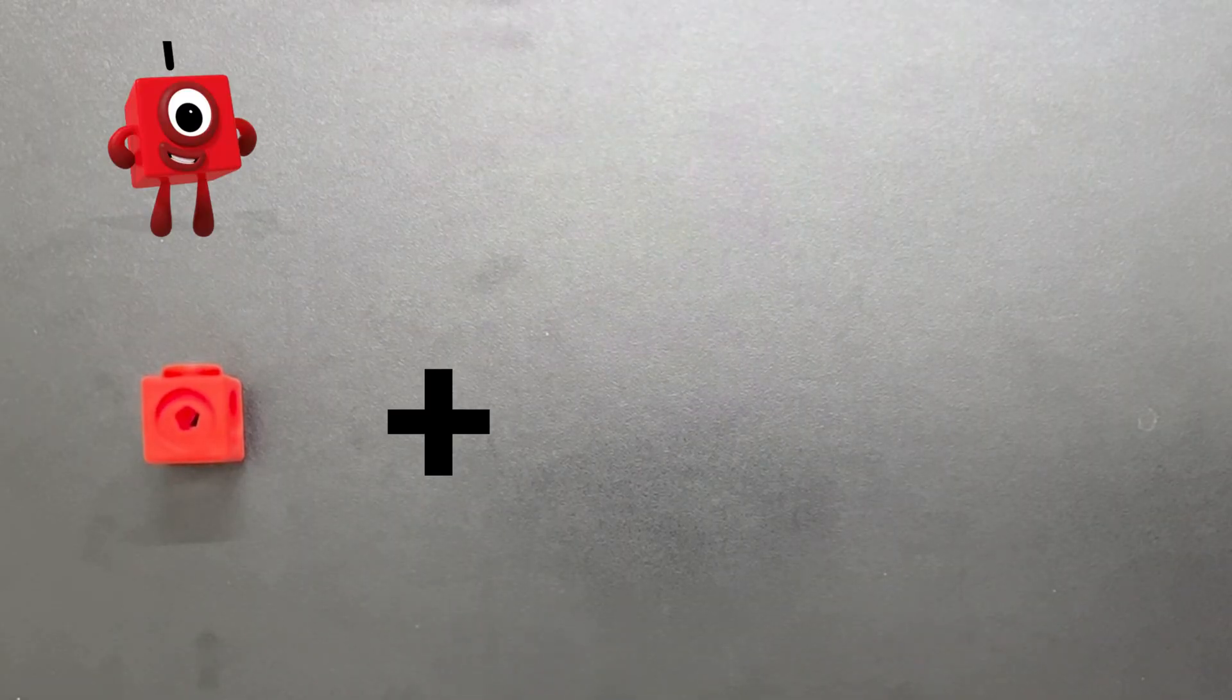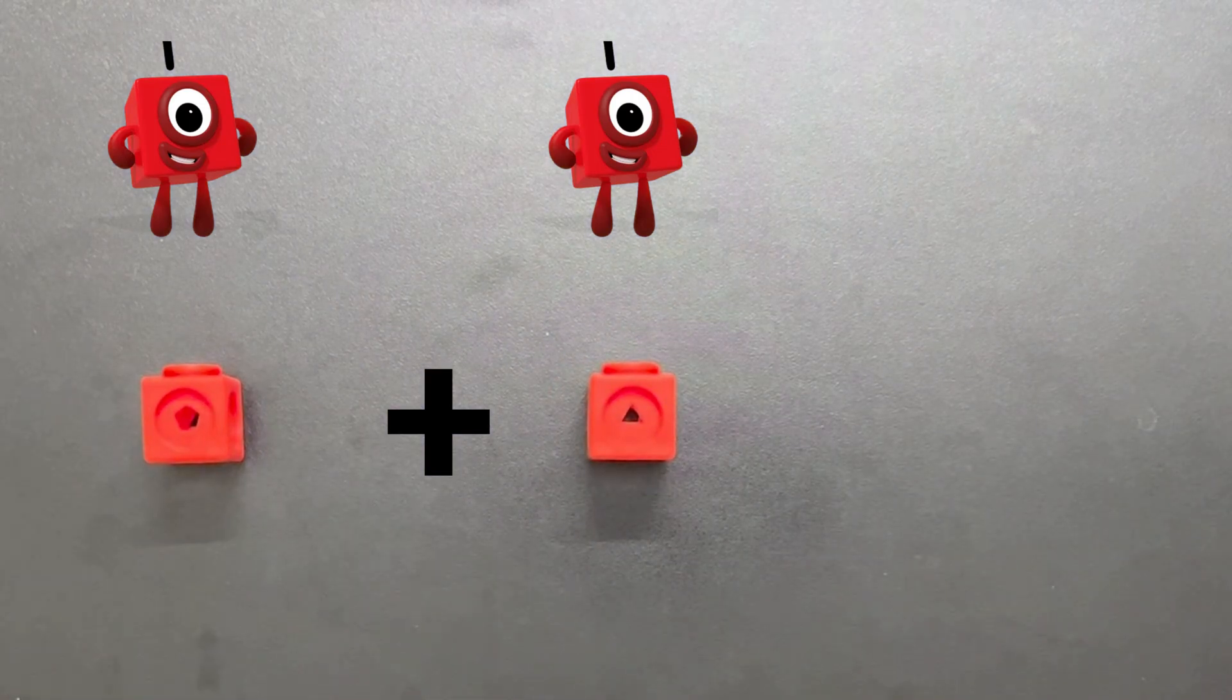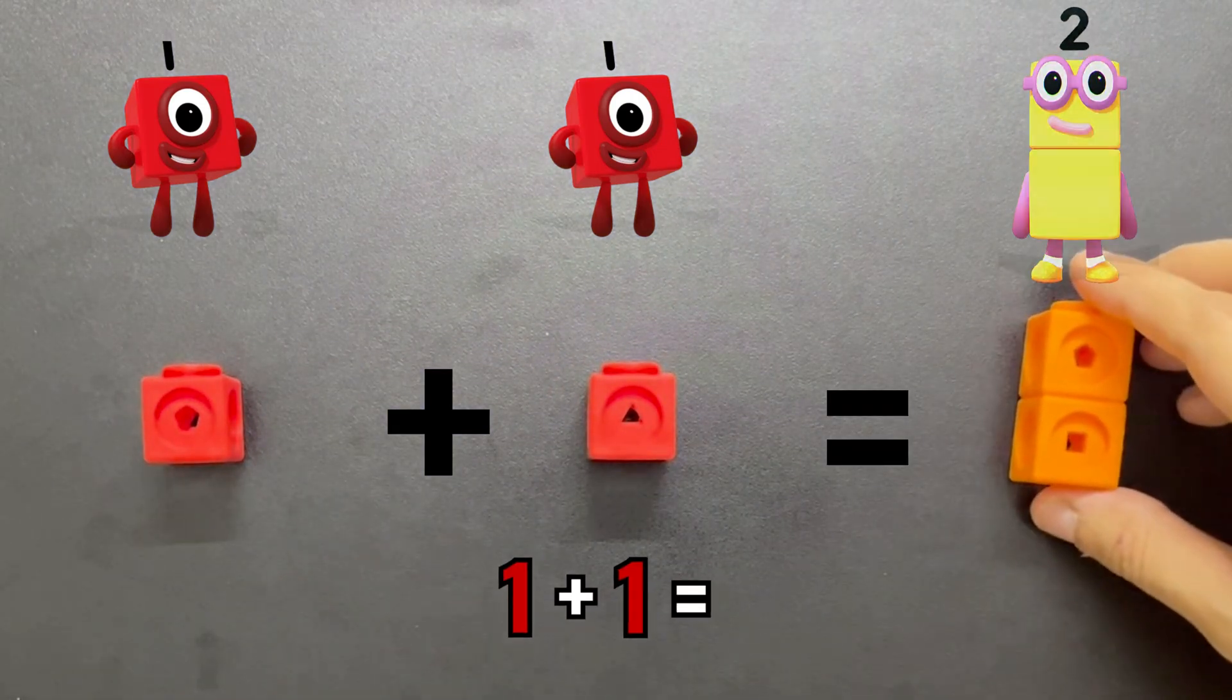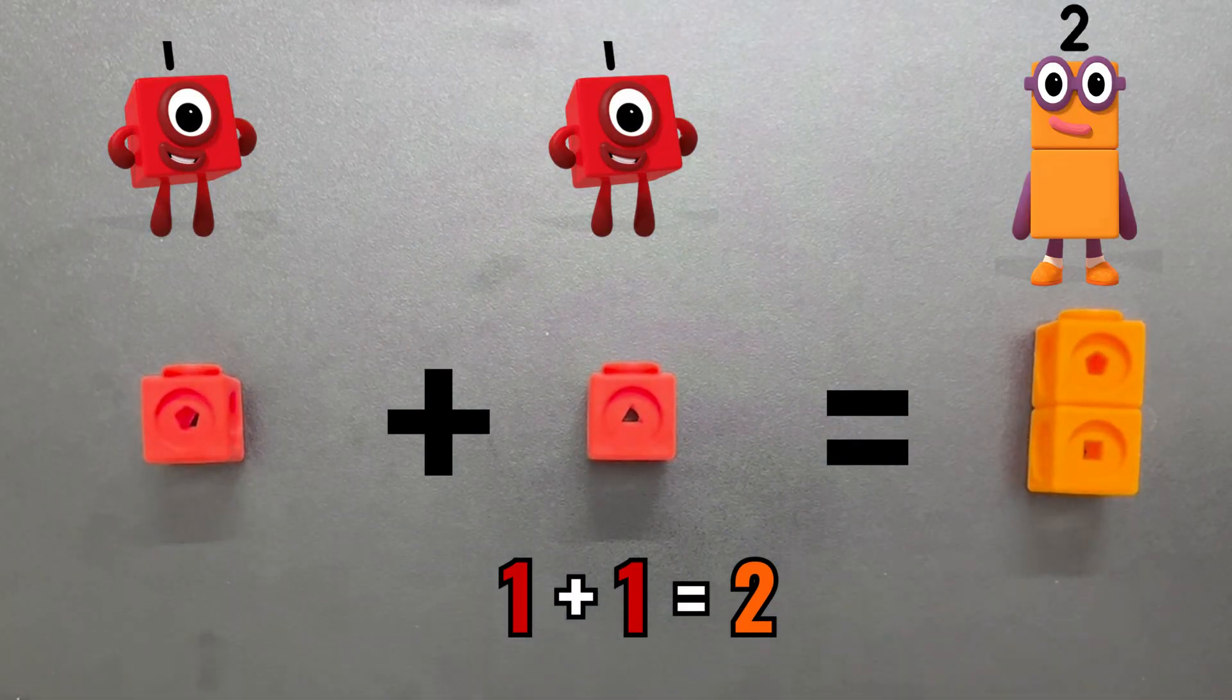Number Two is the best friend. He loves doing things in pairs and believes that two is better than one because everything is more fun with a friend. He often points out things that come in twos, like socks, shoes, or eyes.